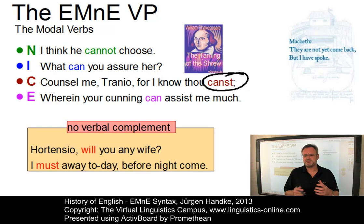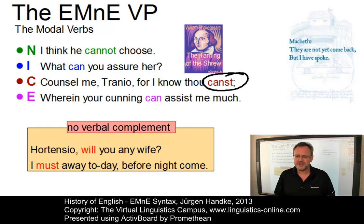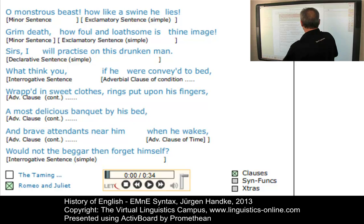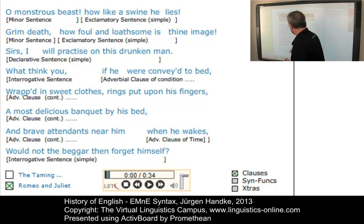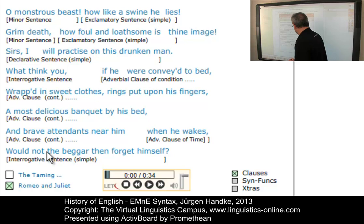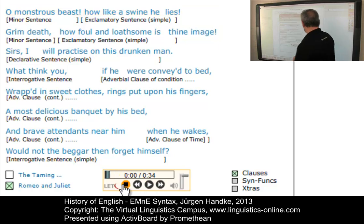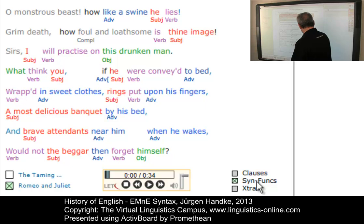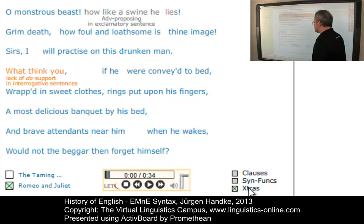Before we summarize, let me point out once more that there is an entry, 'Early Modern English,' in the VLC language index, which allows you to look at further data that has been analyzed for you. In the morphology and syntax section you can find two examples — one from Romeo and Juliet and the second one taken from The Taming of the Shrew. In both cases, you can listen to the audio, access the transliteration, look at a syntactic functional analysis, and access additional syntactic aspects like the lack of do support or adverbial preposing and so on.